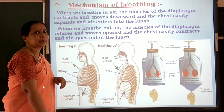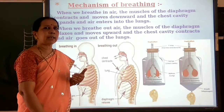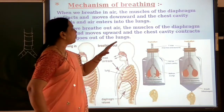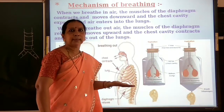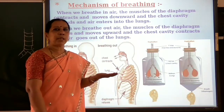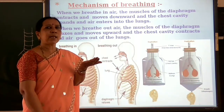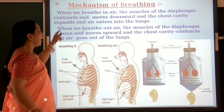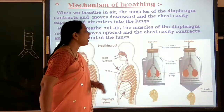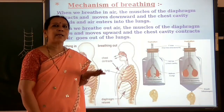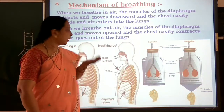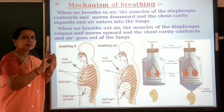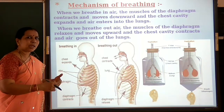Now, the mechanism of breathing. What happens when we take air into the lungs and when we breathe out? When we breathe in, the muscles of the diaphragm contract and move downwards. The diaphragm moves downwards and the chest cavity expands, and air enters into the lungs. The ribs are lifted upwards. With ribs lifted upwards and diaphragm moving downwards, the chest cavity increases and air enters into the lungs.